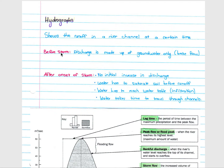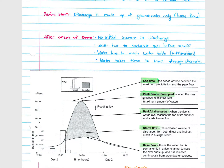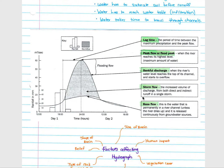Before the storm or rainfall occurs, the discharge is made up of groundwater only. Rivers are fed by base flow from the water table, and if there's no rain, all the water in the river comes from base flow. After the onset of the storm, there is no initial increase in discharge because water has to saturate the soil before there's runoff into the river channels, and water takes time to travel through channels to reach the point of measurement.